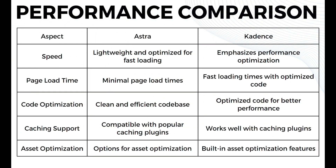Moving on to the performance comparison — in terms of speed, Astra is lightweight and optimized for fast loading while Cadence emphasizes performance optimization. For page load time, Astra offers minimal page load times while Cadence has fast loading times with optimized code. For code optimization, Astra has a clean and efficient codebase while Cadence has optimized code for better performance. For caching support, both are compatible with popular caching plugins. In terms of asset optimization, Astra offers options for asset optimization while Cadence has built-in asset optimization features.